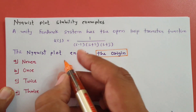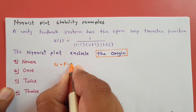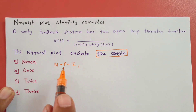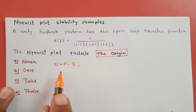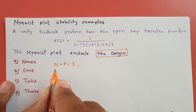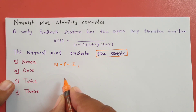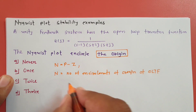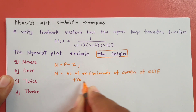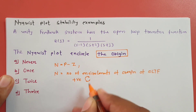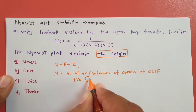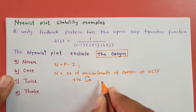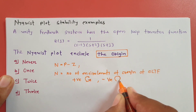For encirclement around the origin, the basic formula is N = P − Z. The meaning of N is encirclement of the origin by the open loop transfer function. The value of N is positive for anticlockwise direction and negative for clockwise direction.